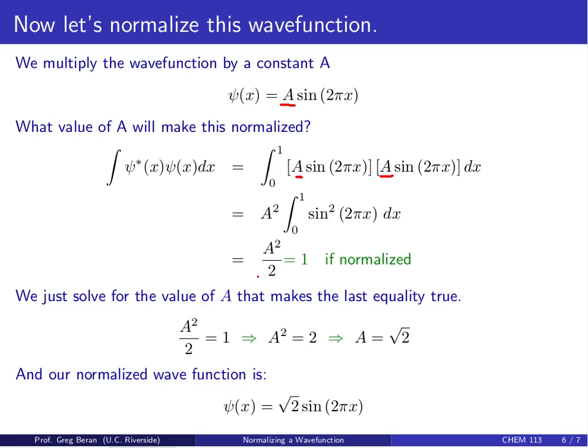You should get that it equals A²/2. Now, if it's normalized, this integral should equal 1. This gives us an expression we can use to solve for the value of A that makes this wave function normalized. If A²/2 is supposed to equal 1, that implies that A = √2.